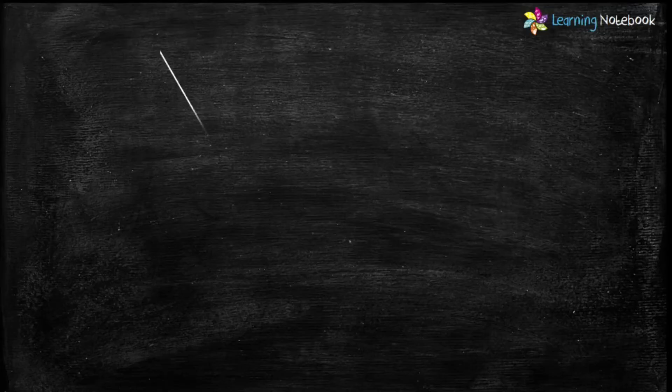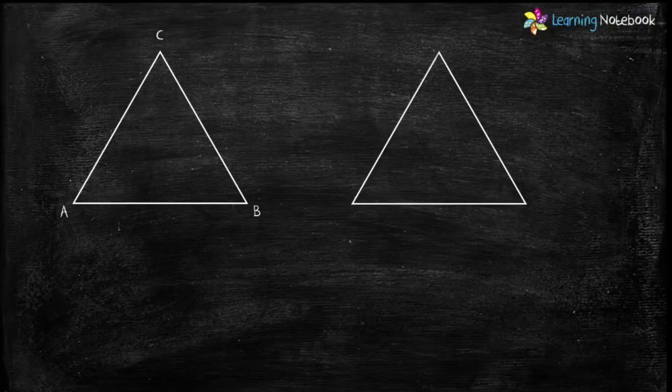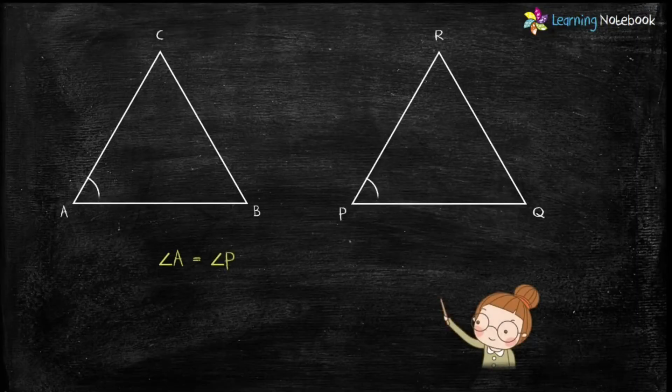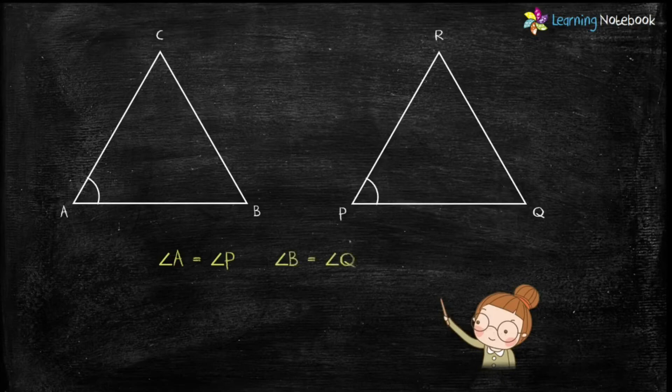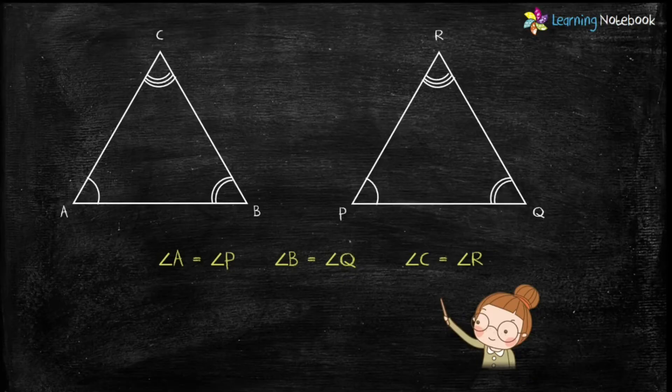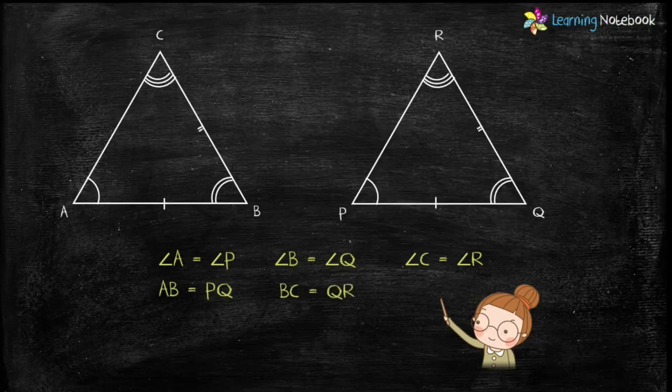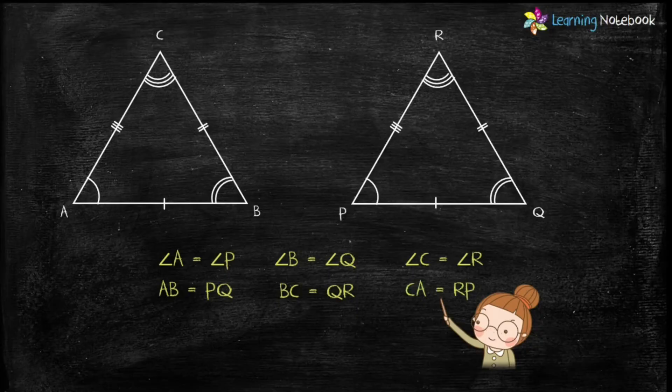So it means in two congruent triangles ABC and PQR, angle A equals angle P, angle B equals angle Q, and angle C equals angle R. Also, AB equals PQ, BC equals QR, and CA equals RP.